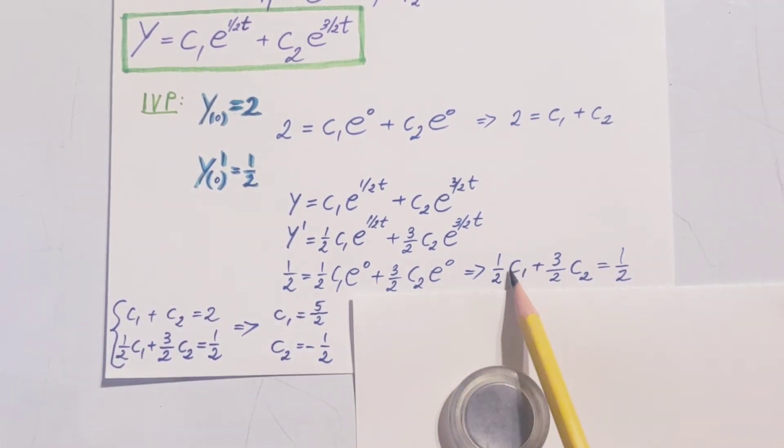Now, we have two equations and two unknowns. So simply make a system of equations out of it, and we're able to find our c1 and c2. c1 equals 5/2, c2 is equal to negative 1/2.